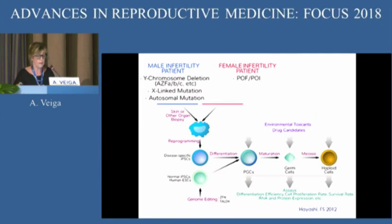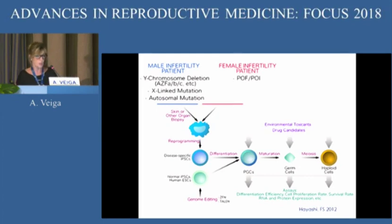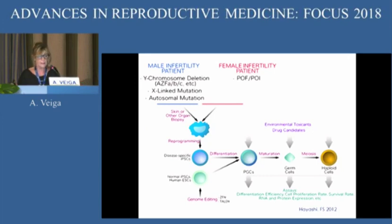Some examples in both male and female infertility: the diseases we study must be of genetic origin, because these will be reproduced in the IPS cells. In the case of male infertility patients, we have Y chromosome deletions, X-linked mutations, and autosomal mutations that lead to infertility. In the case of female infertility, certain genes have been found responsible for premature ovarian failure and premature ovarian insufficiency.